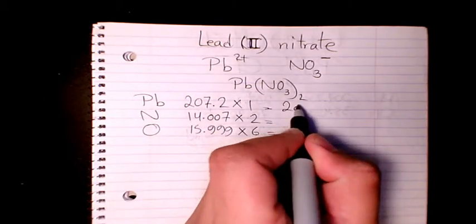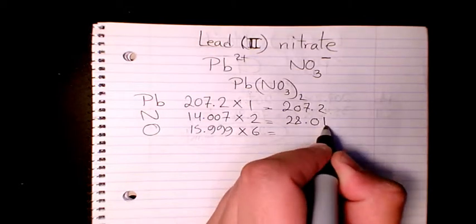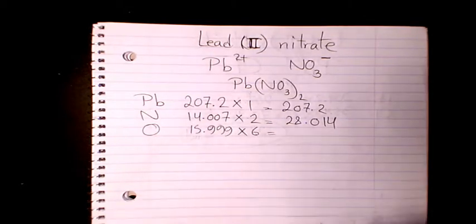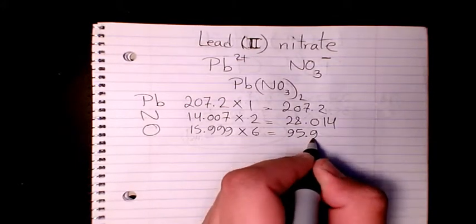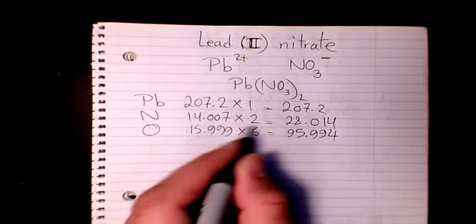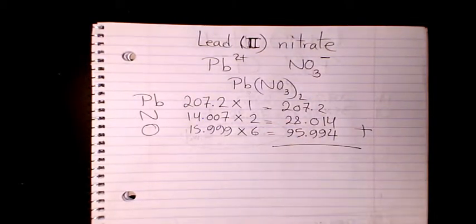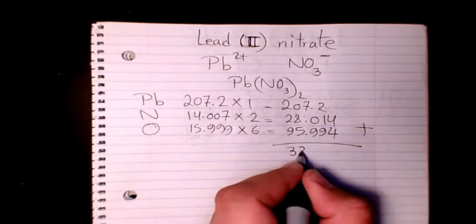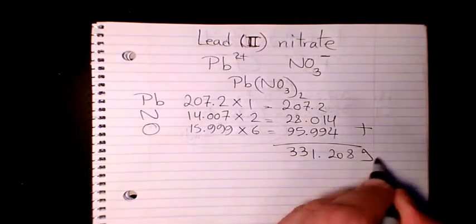So it's going to be 207.2 times one equals 207.2. We have 14.007 times two equals 28.014. And when you multiply, this is 15.999 times six equals 95.994. So I multiply each of them, then I need to add all these numbers. That makes it as 331.208 grams per mole.